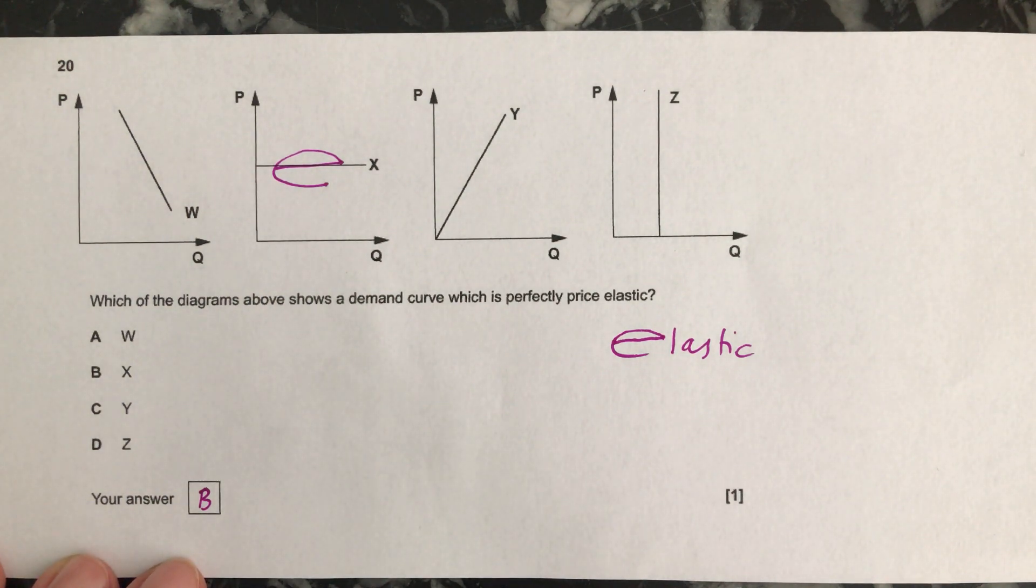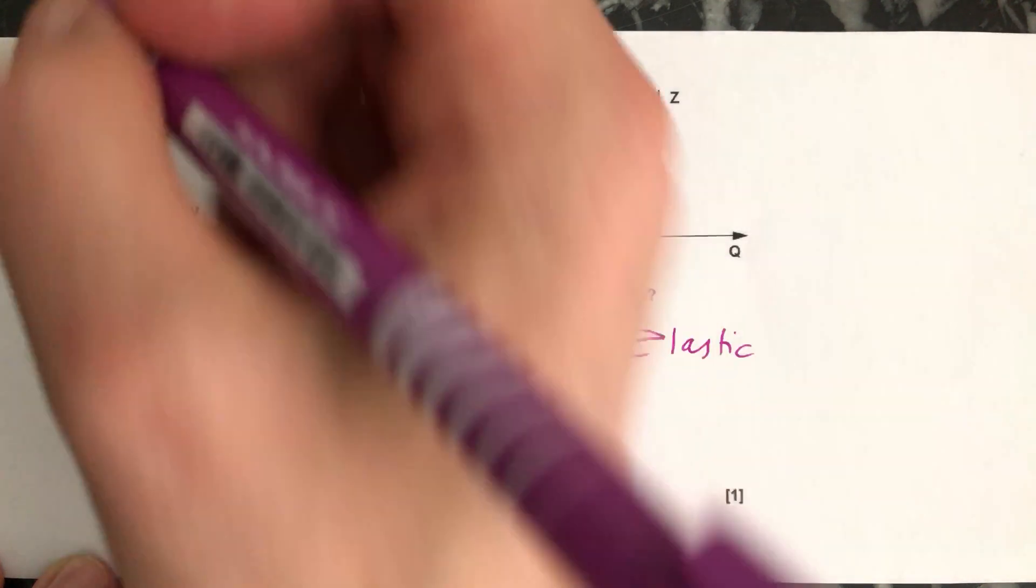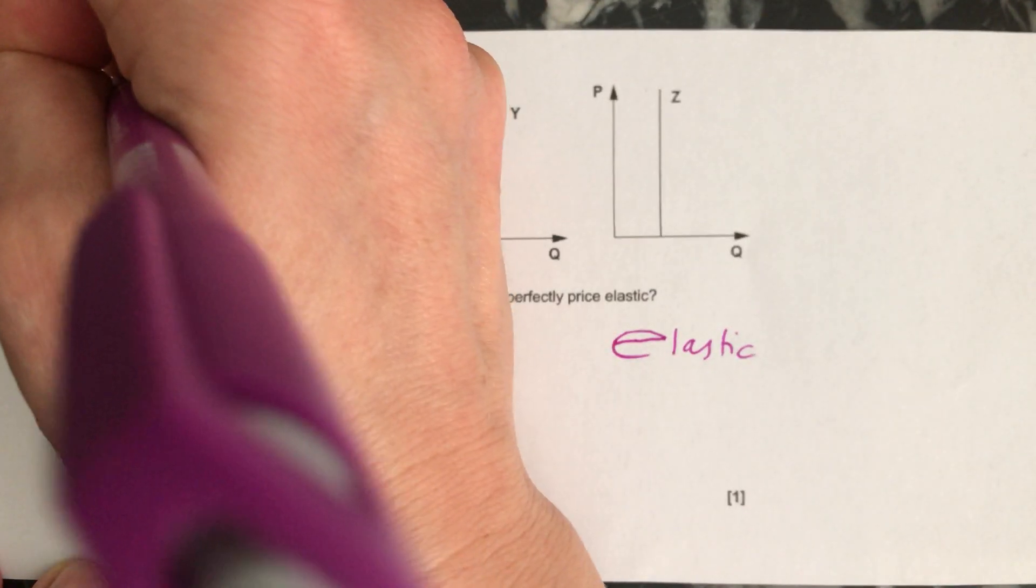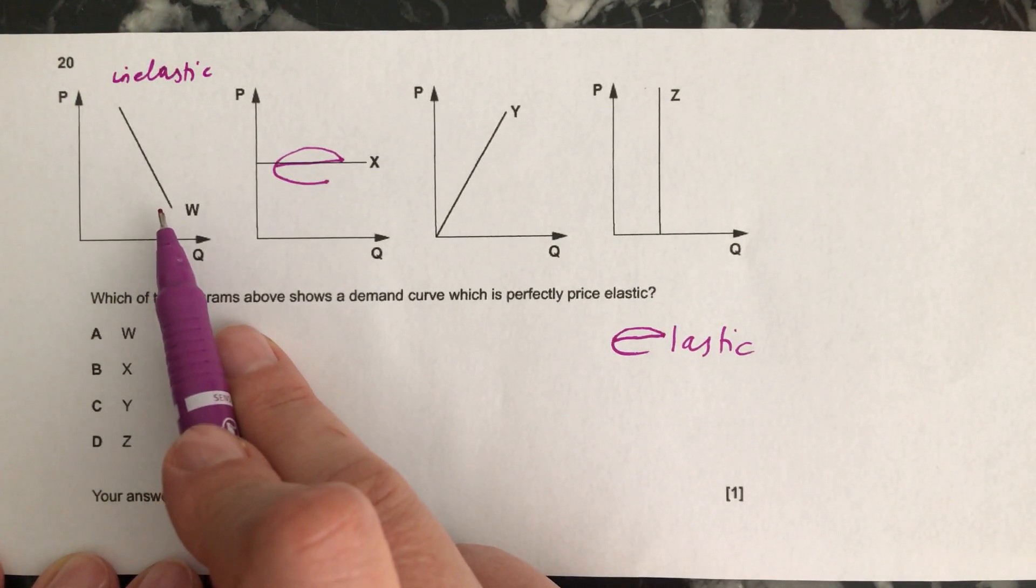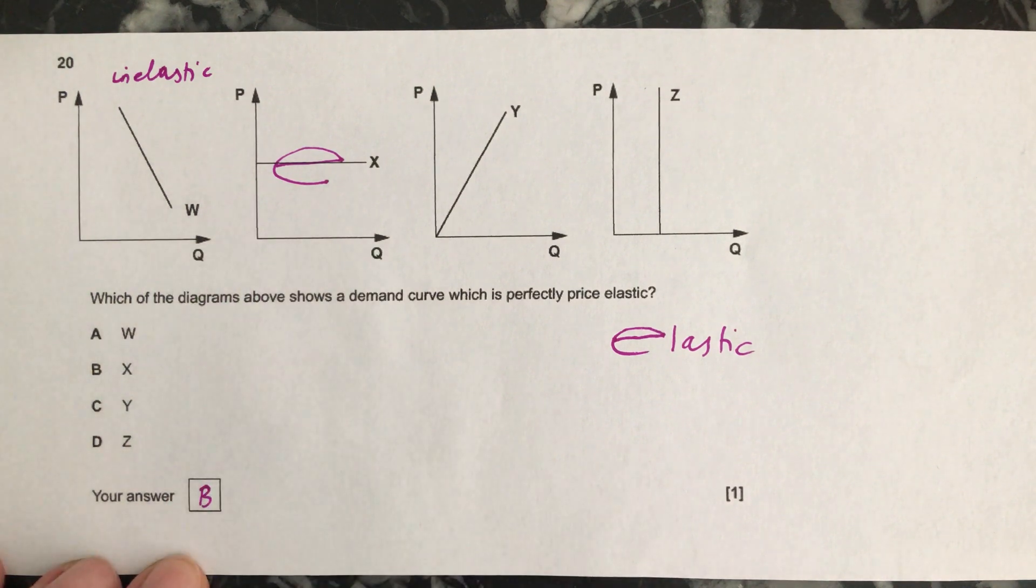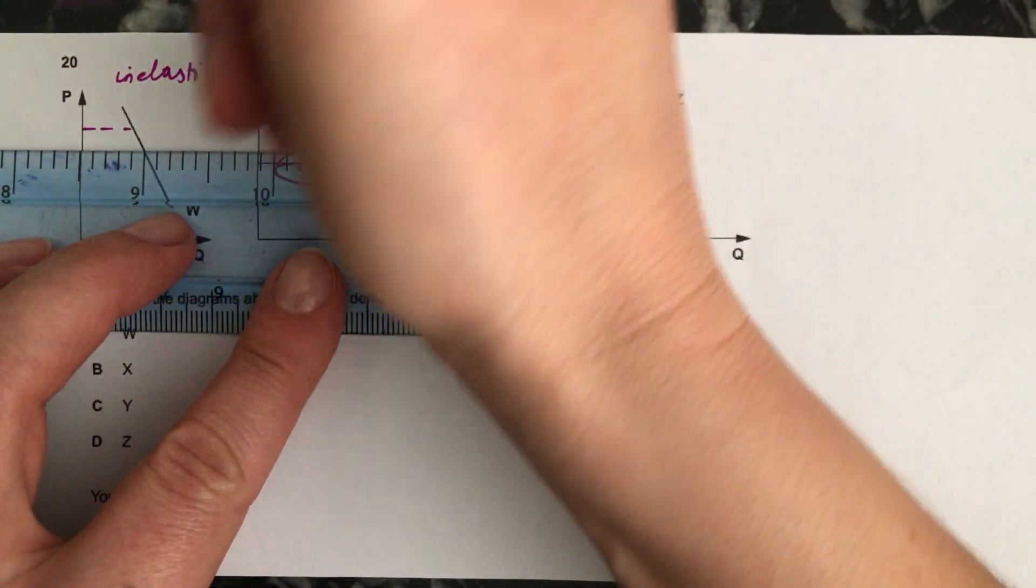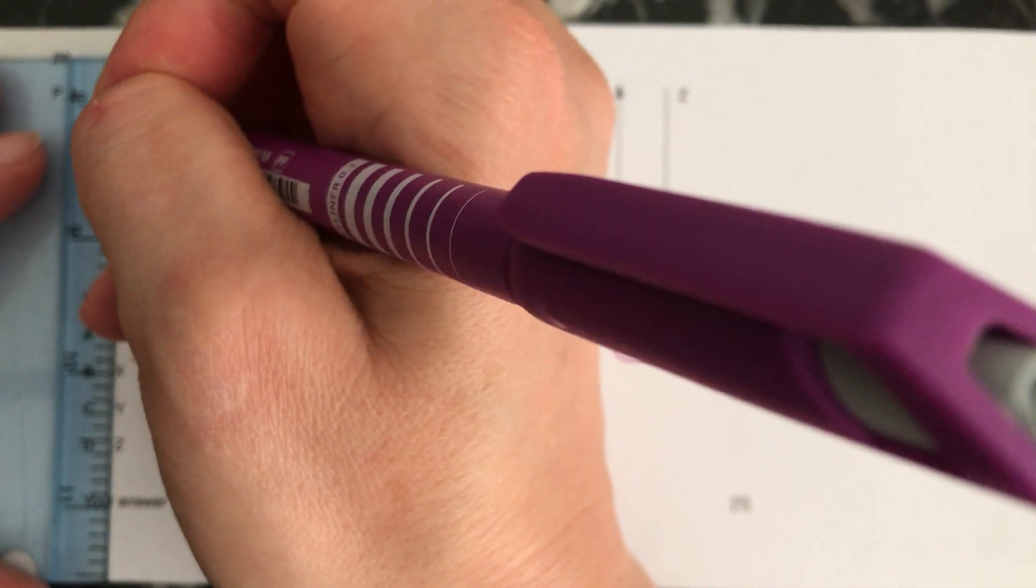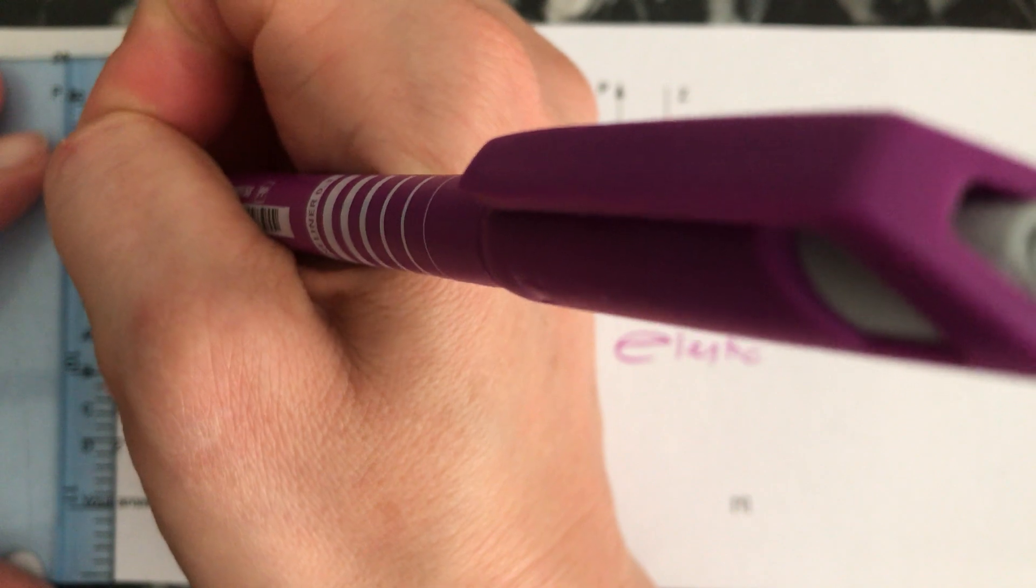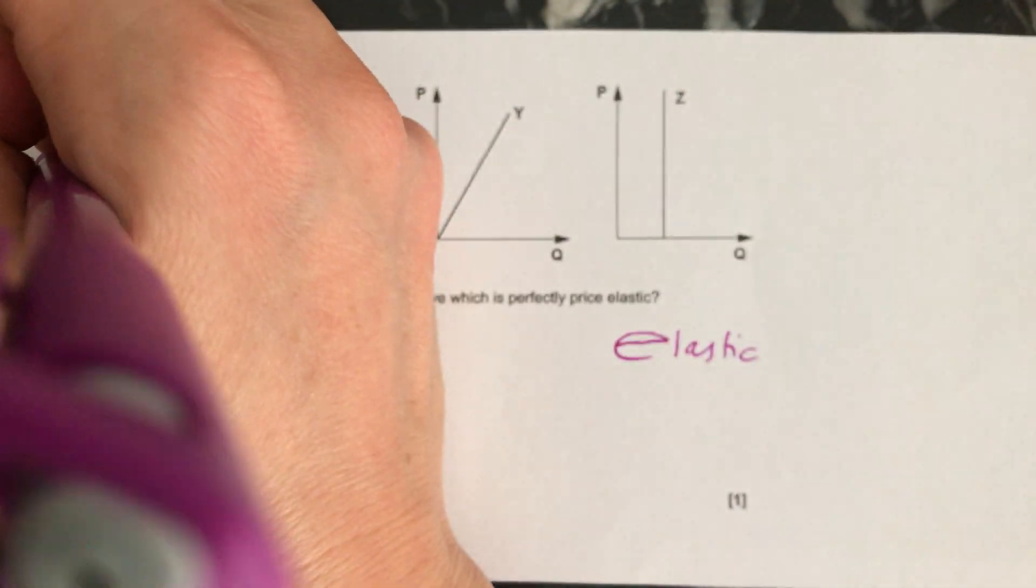Just to review the other curves, this one here I think is probably just inelastic because it looks as if a percentage change in price causes a smaller percentage change in quantity demanded, but you'd need to check that by using your ruler to see whether that's true, to see whether the change in price causes a smaller percentage change in the quantity demanded.